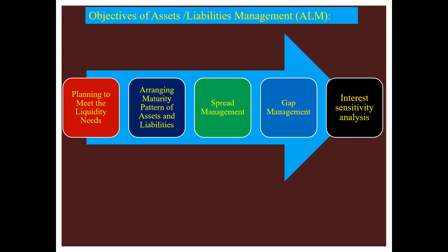The first objective is planning to meet the liquidity needs. Making funds available at a competitive price when they are required is the first task of ALM. The task is to achieve a proper mix of funds by keeping the level of non-interest funds to the bare minimum, maximizing fund allocation to high-profit areas, while simultaneously ensuring availability of funds to meet all eventualities.